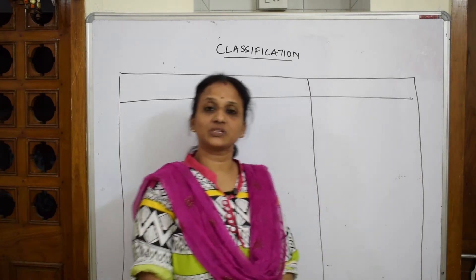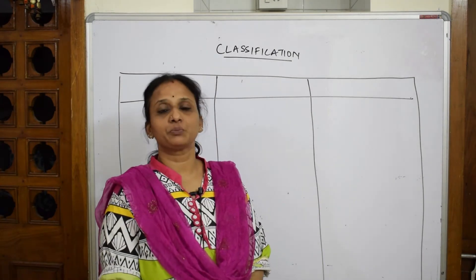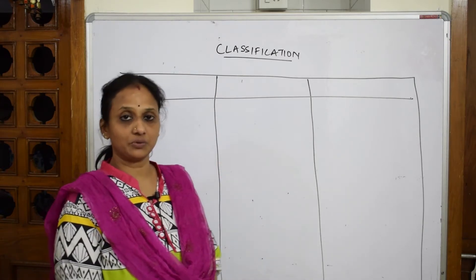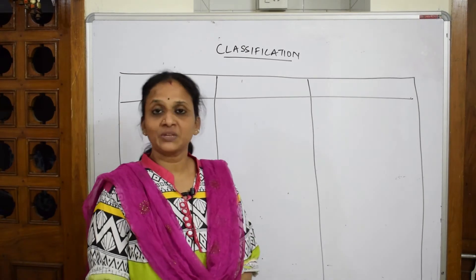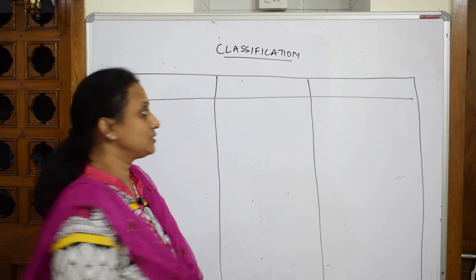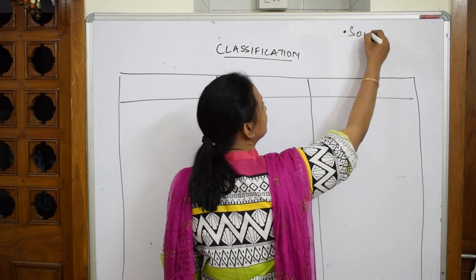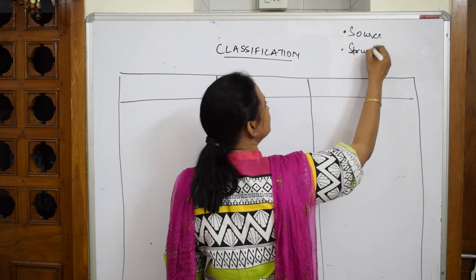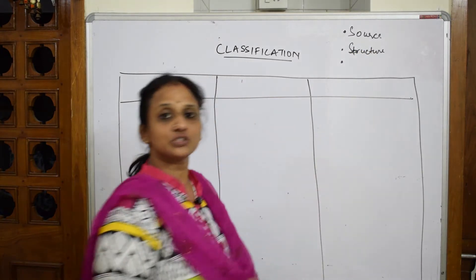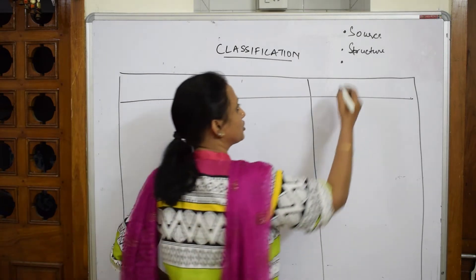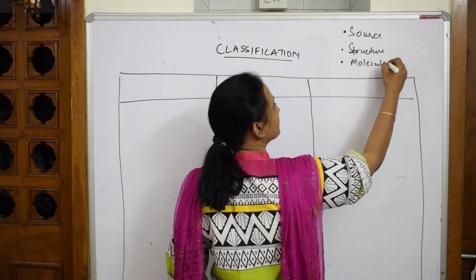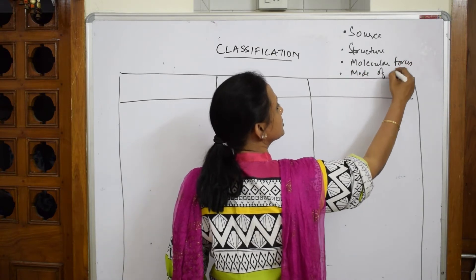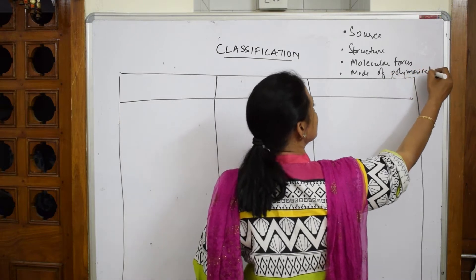Let's start with the classification of polymers. We are going to classify polymers based on source, based on structure, based on the molecular forces among them, and also based on the mode of polymerization — addition polymerization or condensation polymerization.